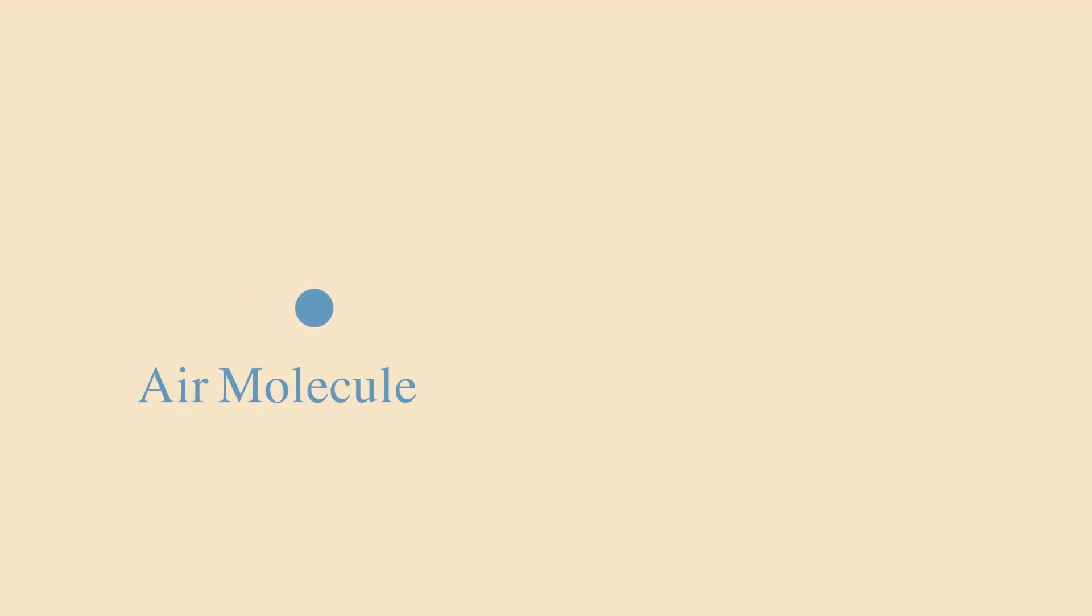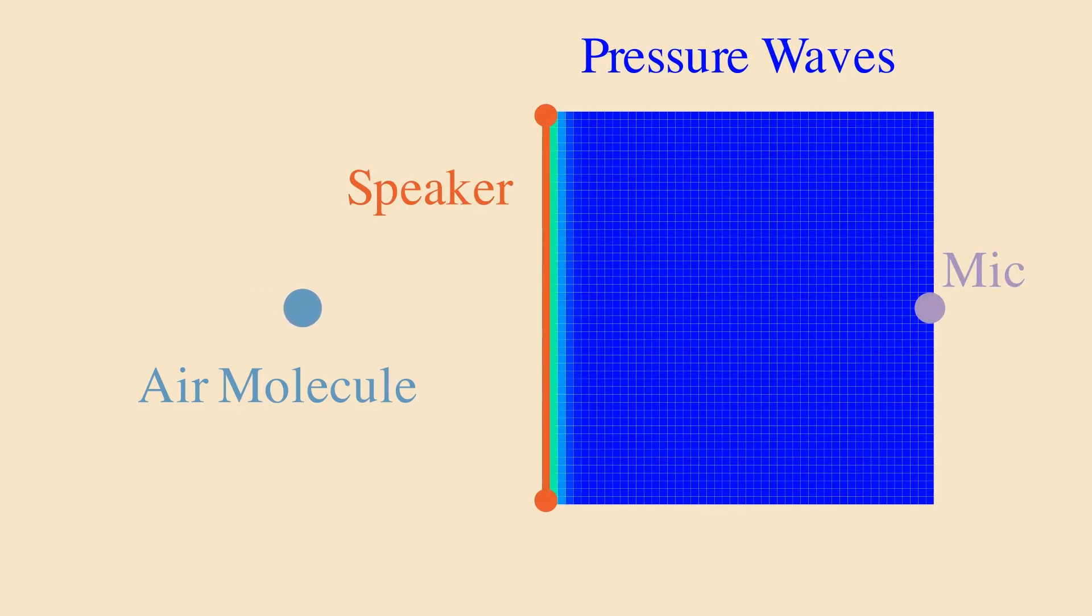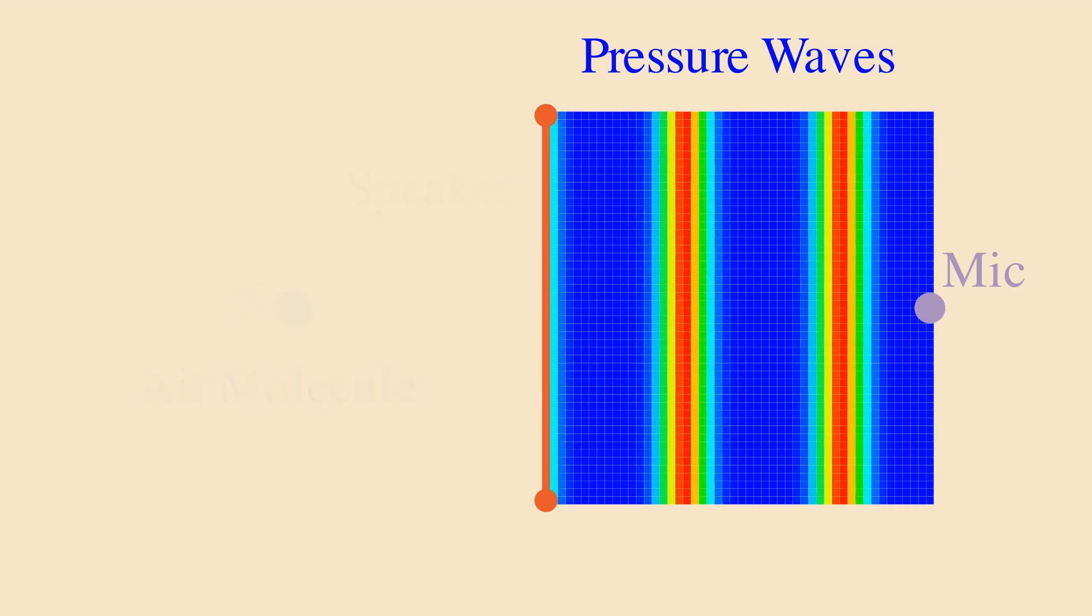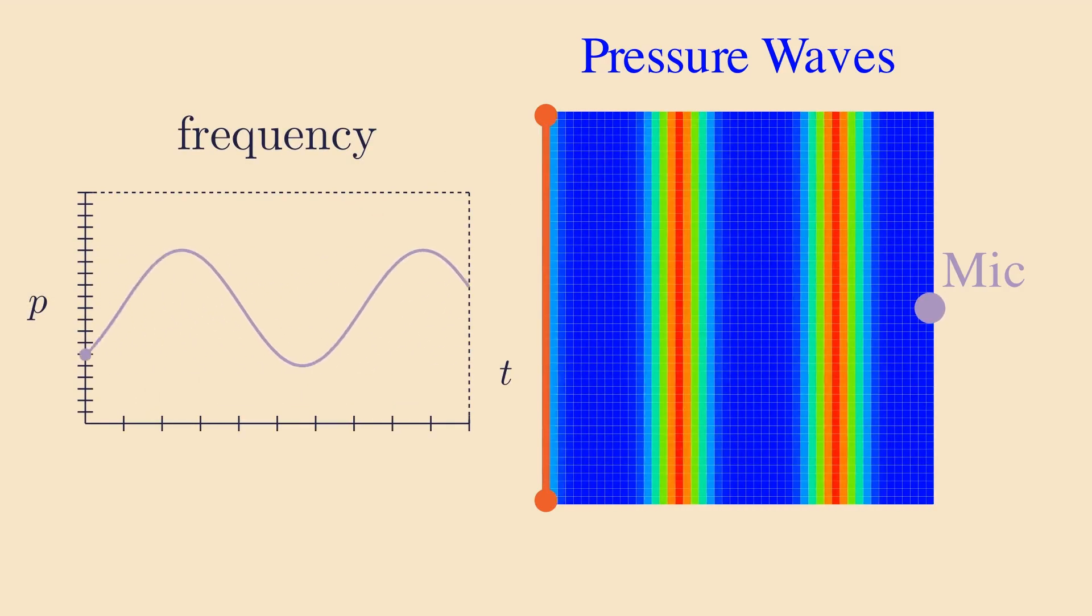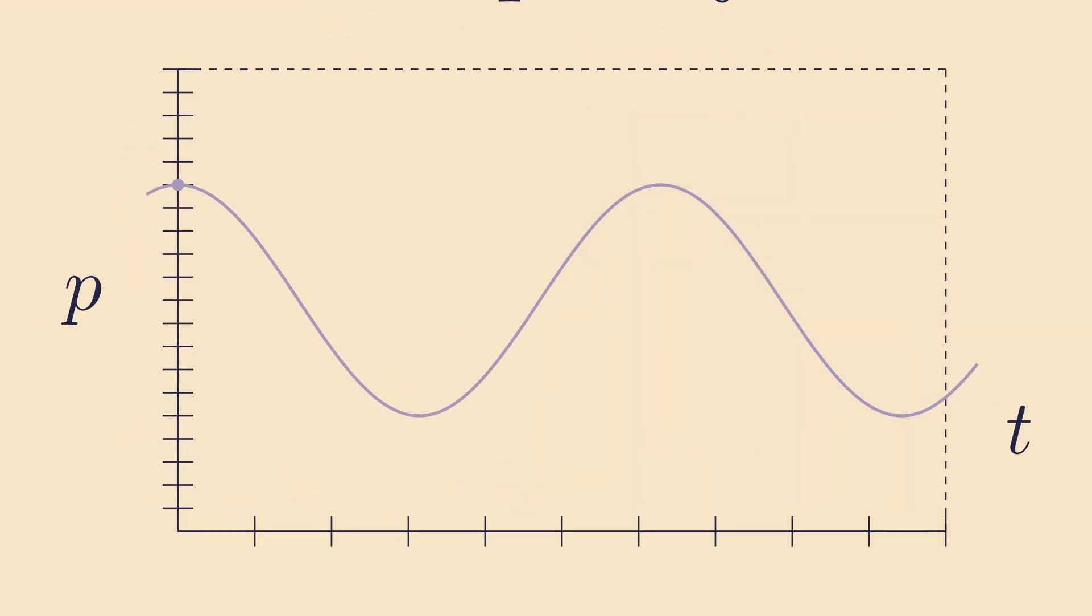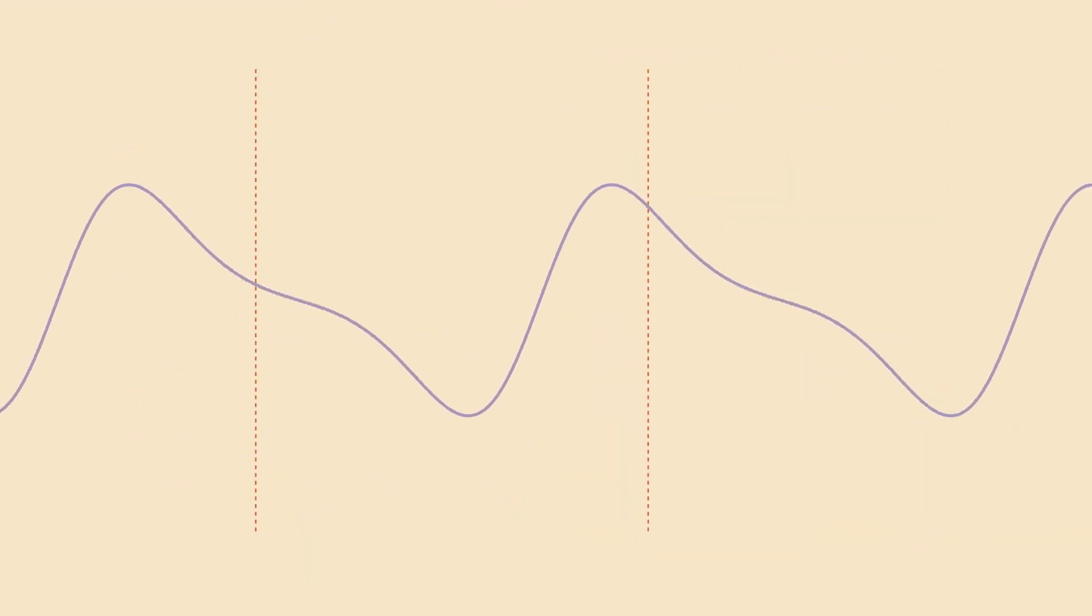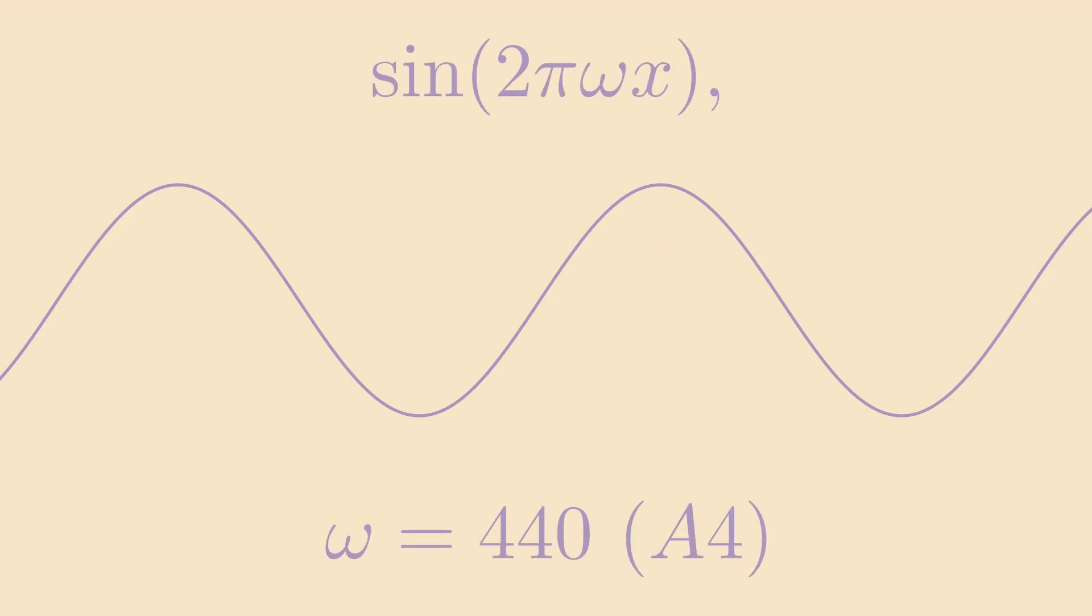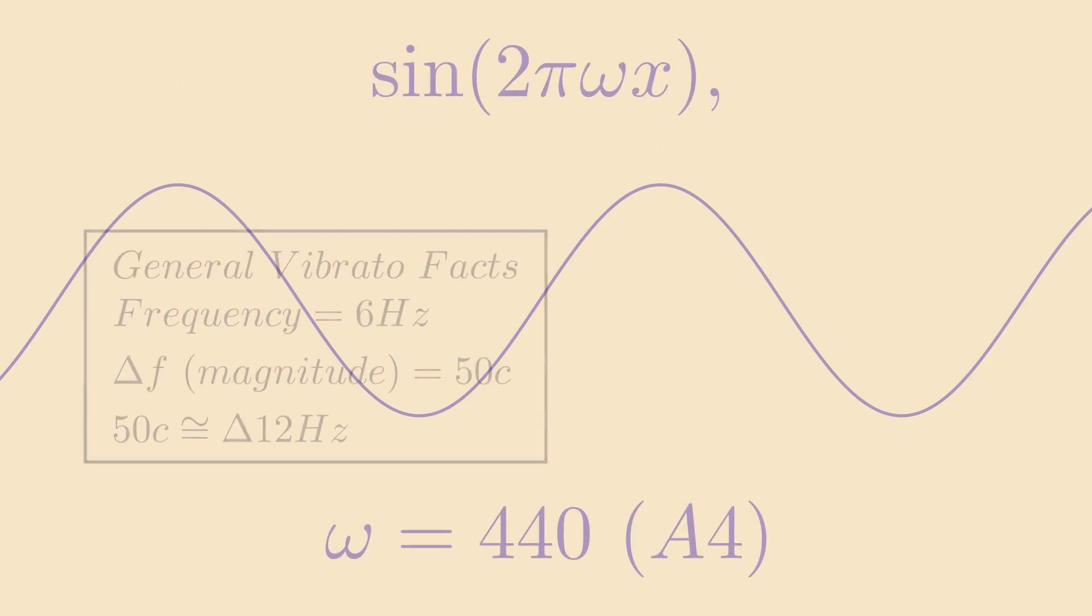Sound is the vibration of air molecules. Physically, we're able to detect this vibration as waves of pressure. When we play a basic note and measure the pressure, we'll get basic sine waves. To add vibrato, we would want to change the frequency over time. Make the sine wave faster here and slower there. So, we might consider writing the frequency itself as a sine function. Since generally vibrato is around 6 Hz and has a magnitude around 50 cents,